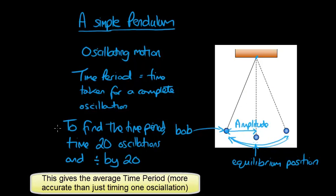And that will give you the time period of one oscillation. And that would be more accurate than trying to just find one oscillation.